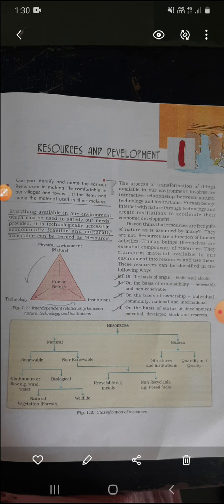Next is human resources. Human resources are categorized into two parts: number one — structures and institutions; and number two — quantity and quality. Structures and institutions means structures are built, systems are made, institutions are formed, organizations are created. On the basis of quantity, human resources are classified differently, and on the basis of quality, human resources are classified separately.